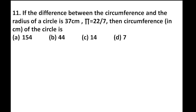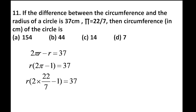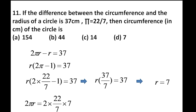Moving to the 11th question. If the difference between the circumference and the radius of a circle is 37 cm, find the circumference. Circumference − radius = 2πr − r = r(2π − 1) = 37. Substituting π = 22/7, we get r × (37/7) = 37, so 37 cancels and r = 7. Circumference = 2πr = 2 × (22/7) × 7 = 44. So the second option is correct.